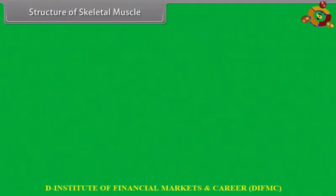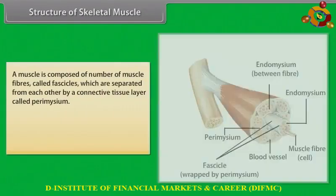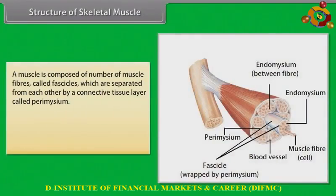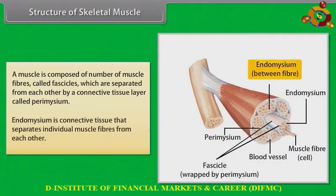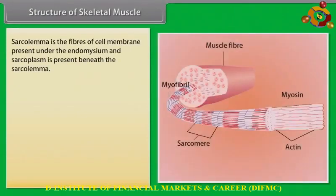Structure of skeletal muscles. A muscle is composed of a number of muscle fibers called fascicles, which are separated from each other by a connective tissue layer called perimysium. Endomysium is connective tissue that separates individual muscle fibers from each other.